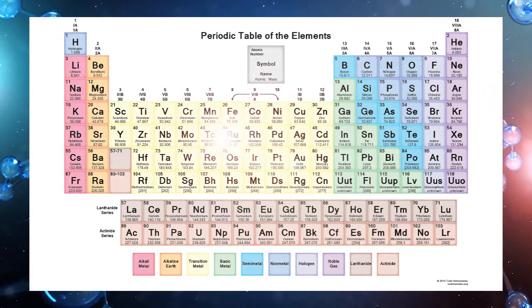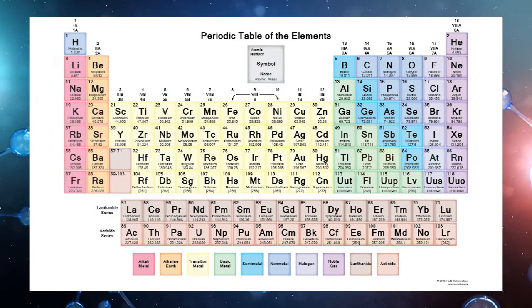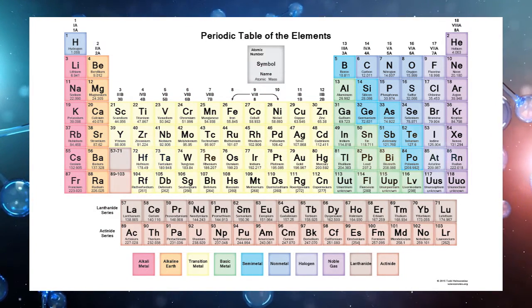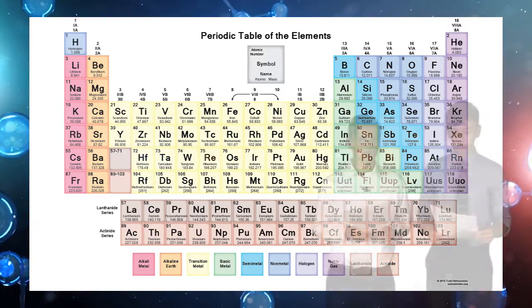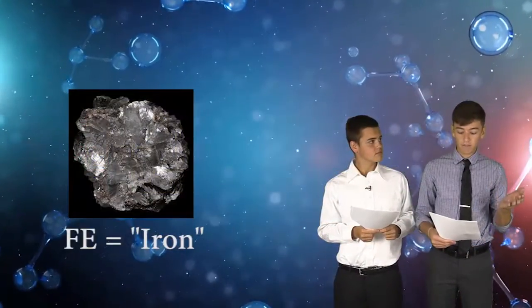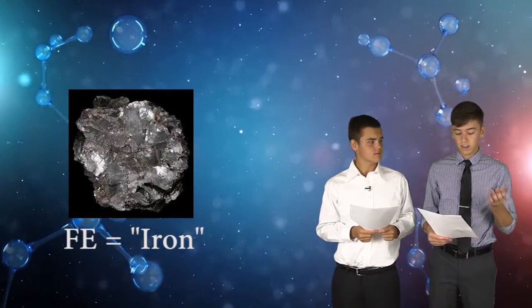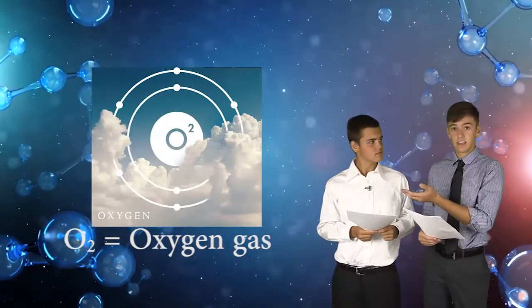All forms of matter, both living and non-living, are made up of a limited number of building blocks called chemical elements. Different elements make up the three states of matter. For example, Fe, or iron, is a solid. H2O is a liquid. And O2 is a gas.